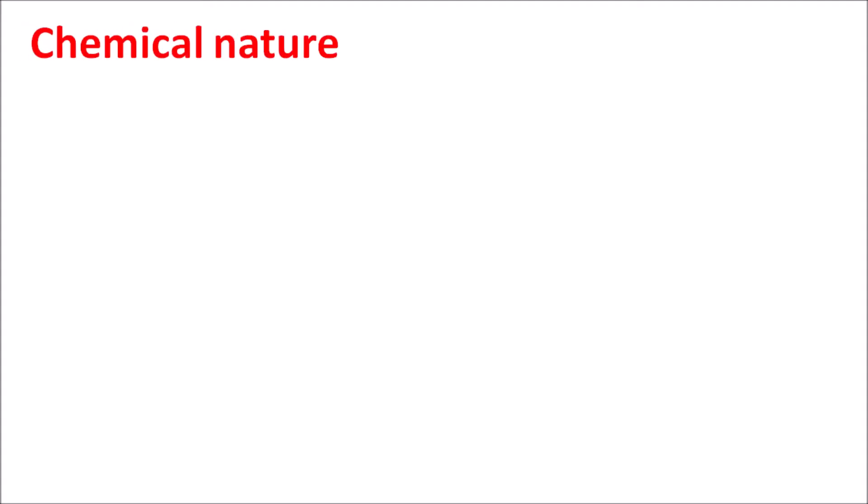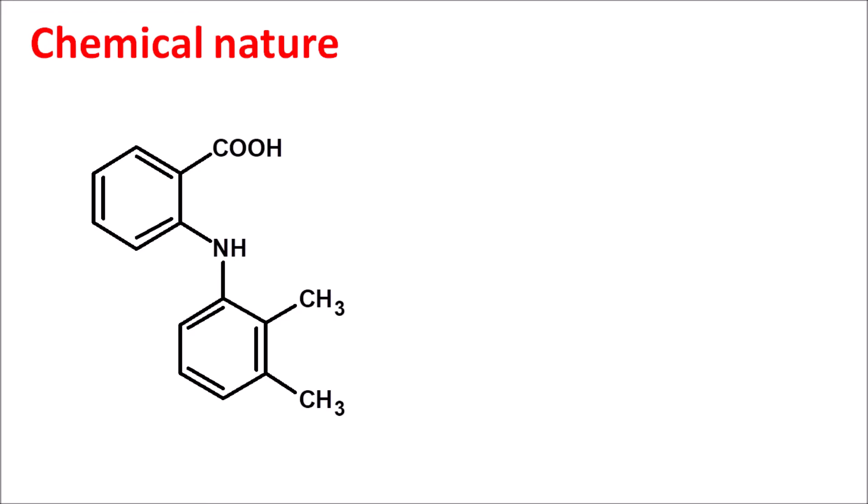Now let us look at the chemical nature of this drug. This is the structure of mefenamic acid; we can easily observe it is having a carboxylic acid attached to an aniline, making it an anthranilic acid derivative. Starting numbering from the carboxylic acid — position one and two — it is simply a benzoic acid derivative.